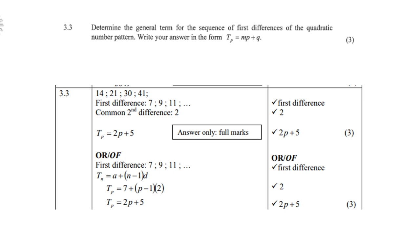Question 3.3: determine the general term for the sequence of first differences in the form tp equals mp plus q. The first differences will form a linear pattern. The terms of the sequence are 14, 21, 30, 41, so the first differences are 7, 9, and 11. The common second difference is 2. Using the arithmetic sequence formula a plus (n minus 1)d, with a equals 7, d equals 2, and n replaced by p, gives tp equals 2p plus 5.